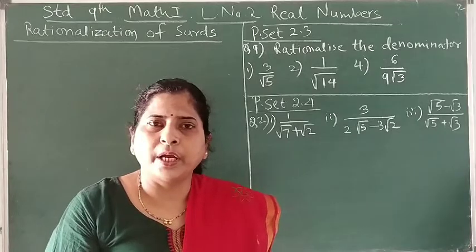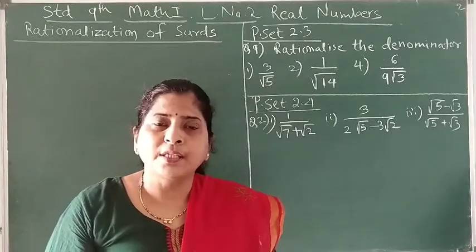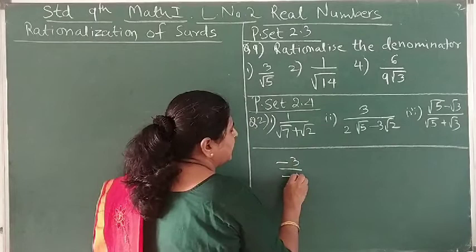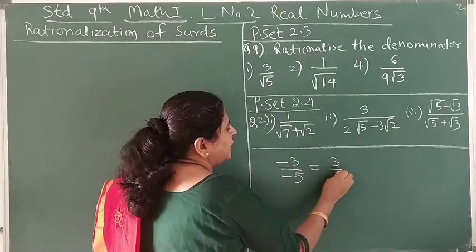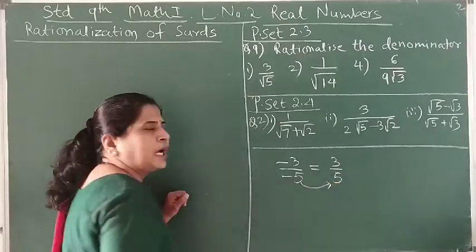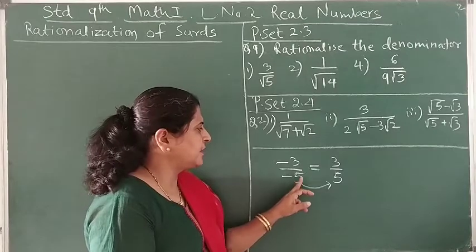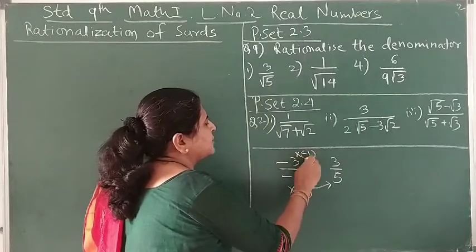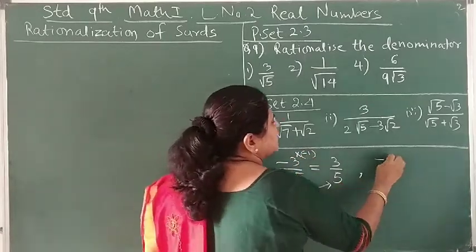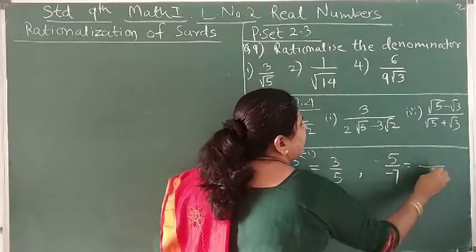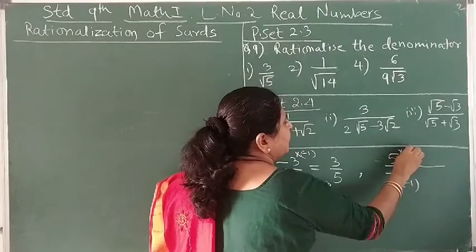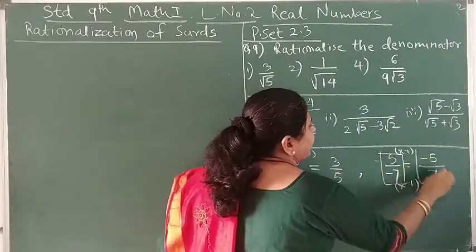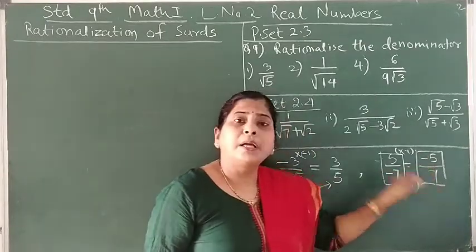Just as it is customary to write the denominator of a rational number as a positive rational number — for example, if the number is given as minus 3 upon minus 5, we write it as 3 upon 5. We write the denominator as positive by multiplying both numerator and denominator by minus 1. Similarly, 5 upon minus 7 becomes minus 5 upon 7.